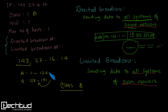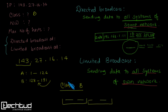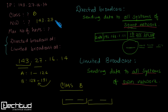In Class B, we use the first two octets as the Network ID and the remaining two as the Host ID. So the network ID here is the first two octets: 143.27, and the remaining two are zero. The network ID is 143.27.0.0.